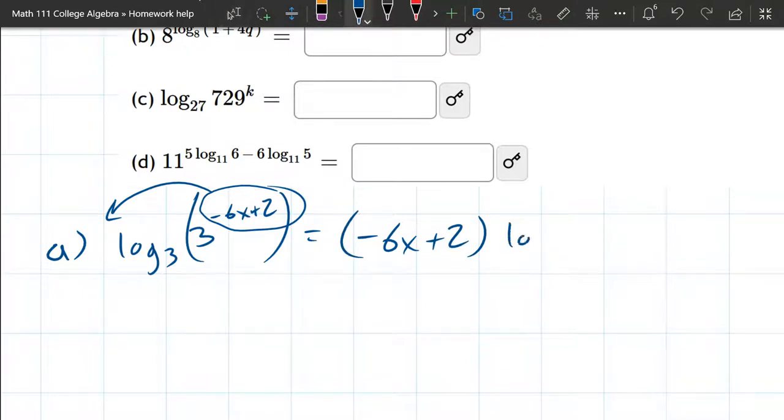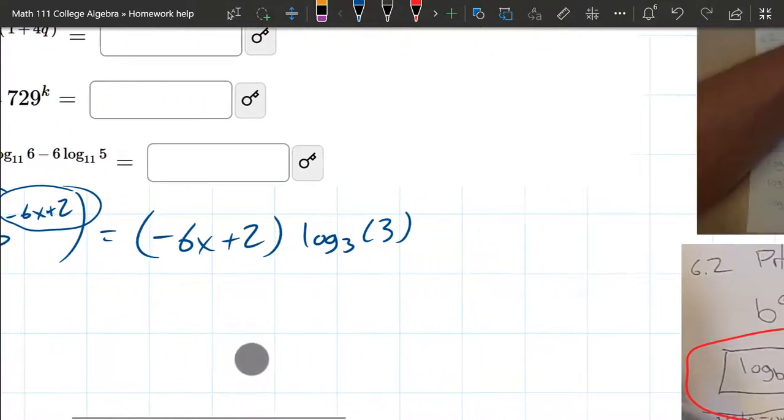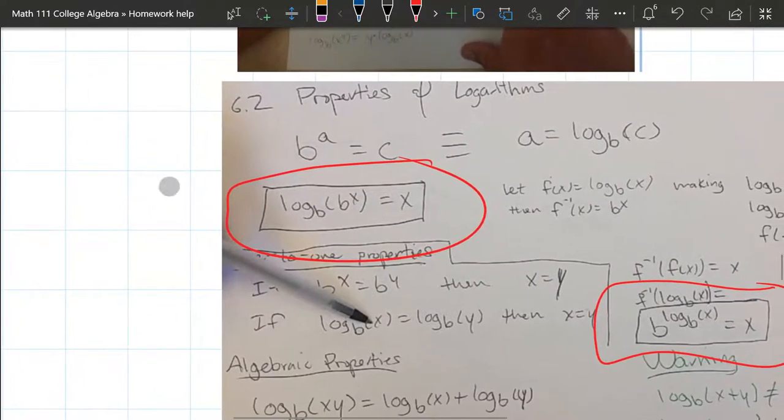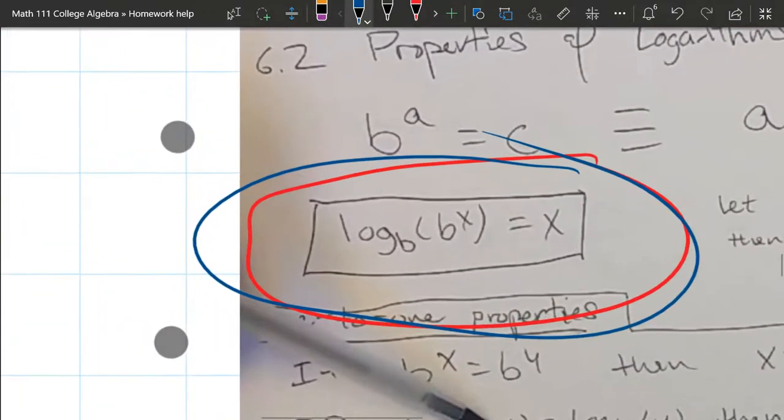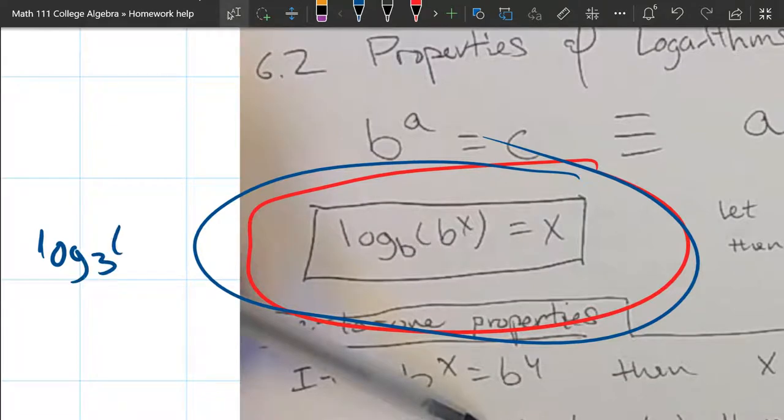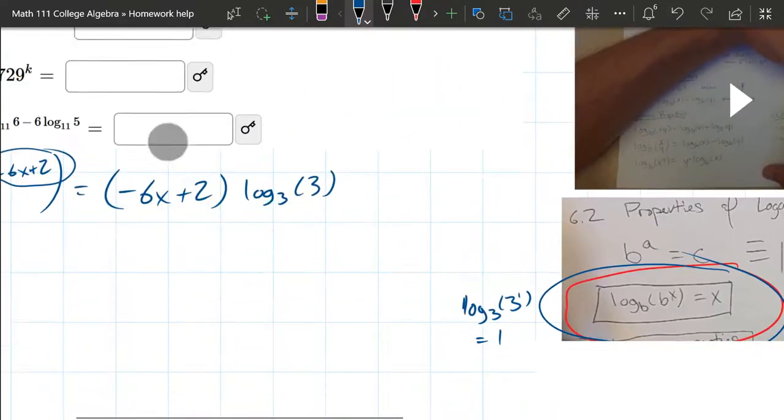So we have that times log₃ of 3. Now from here there's really nothing more you can do to simplify that, we don't know anything about X. But log₃ of 3 we can simplify. There's a few ways to do it: you could use the definition of a log, you can also look at the properties of a log. In our case we have log₃ of 3 to the first power, and basically this all cancels out and you just get the exponent which will be one.